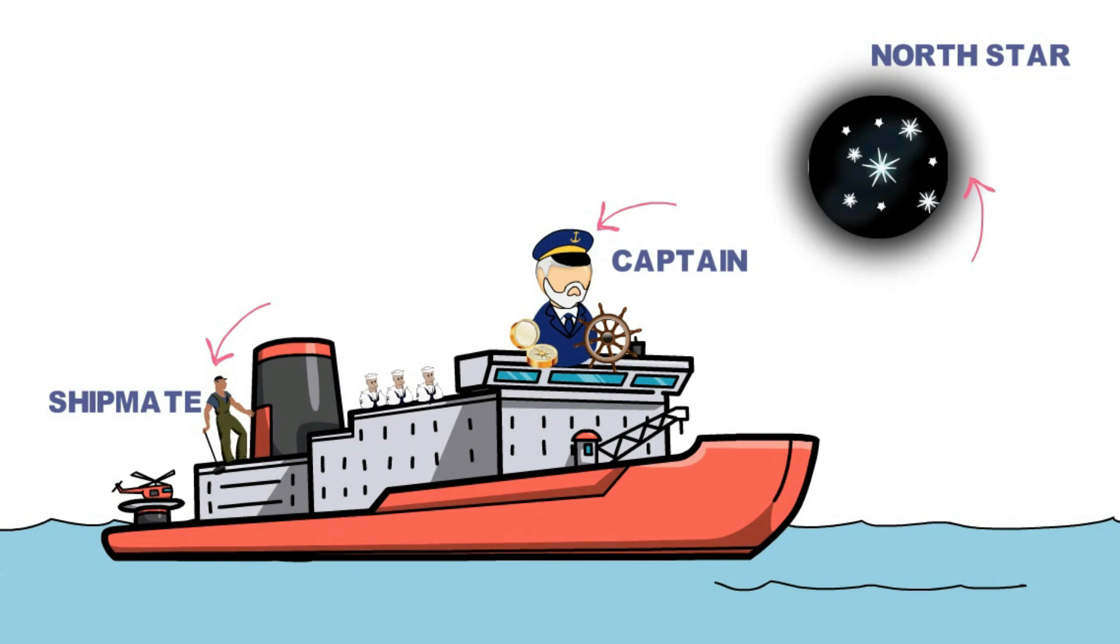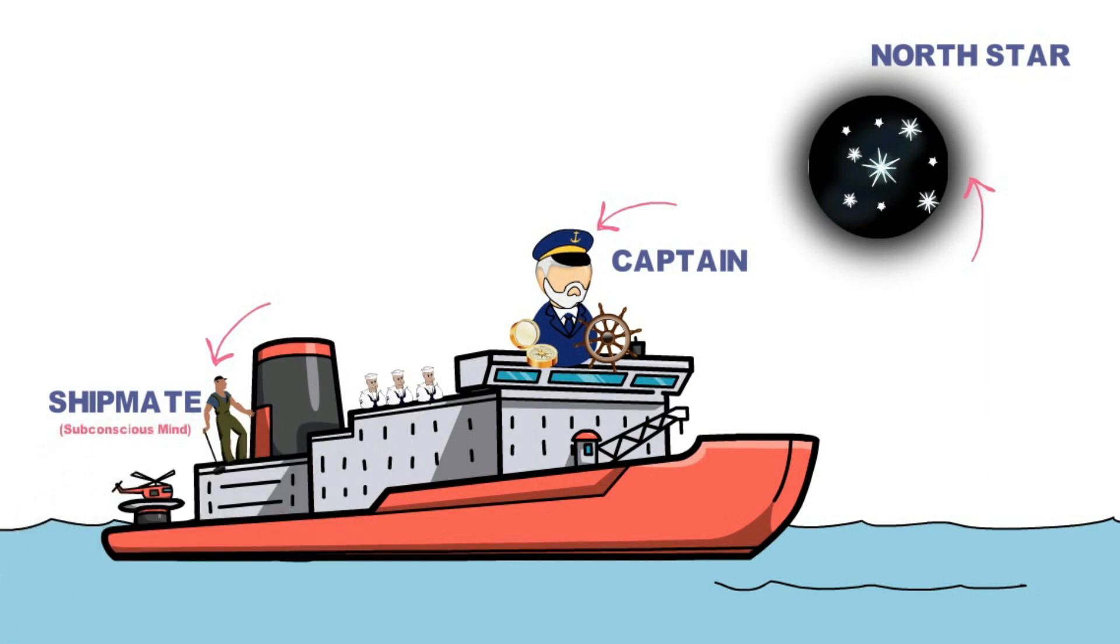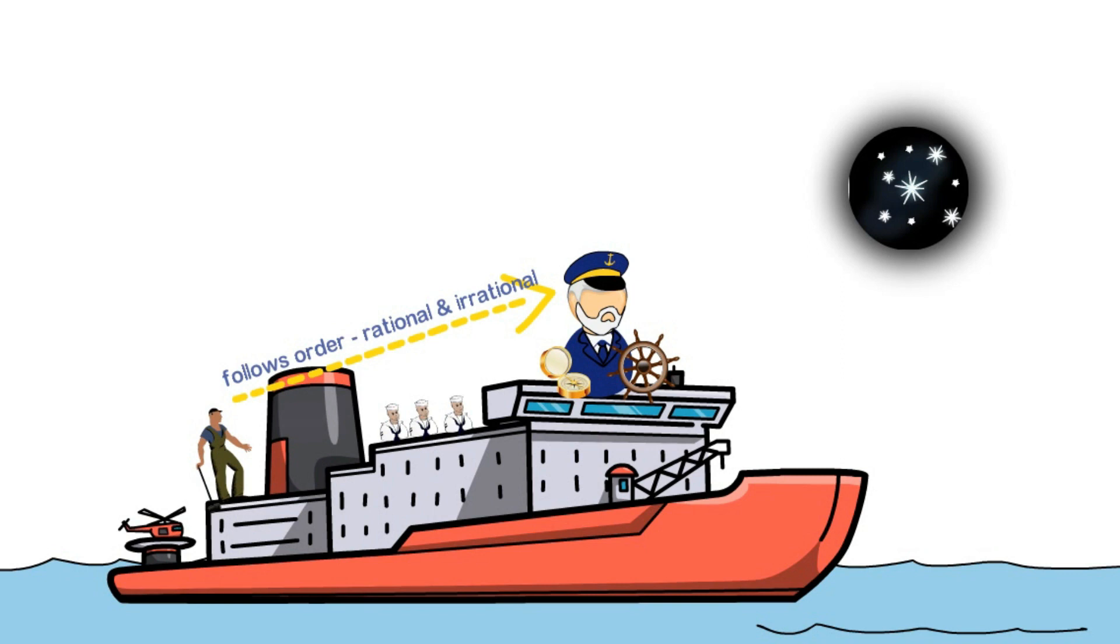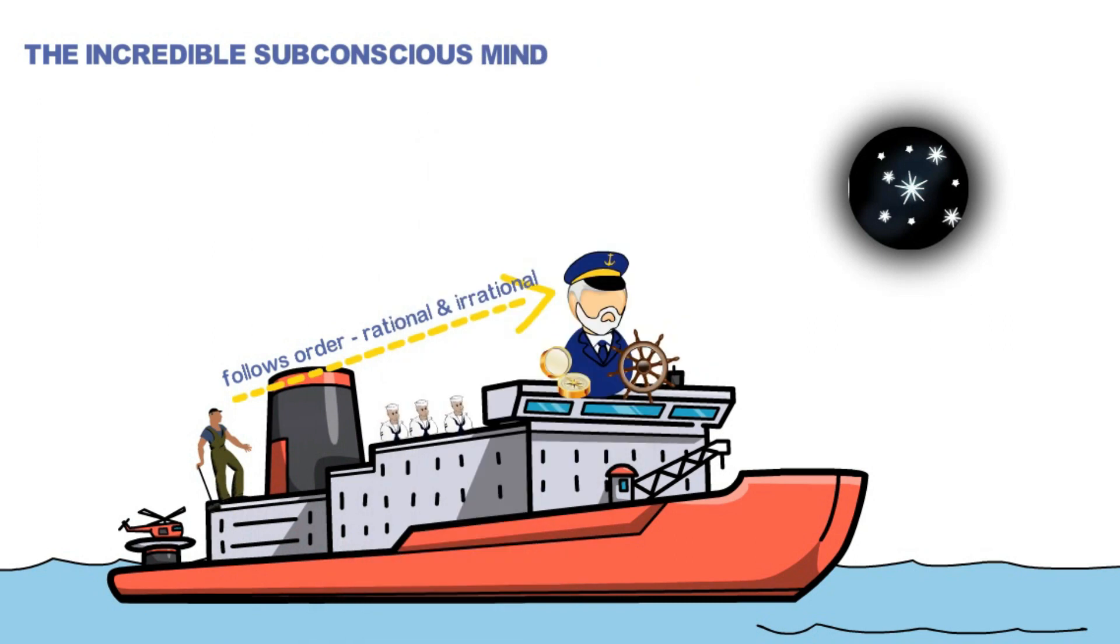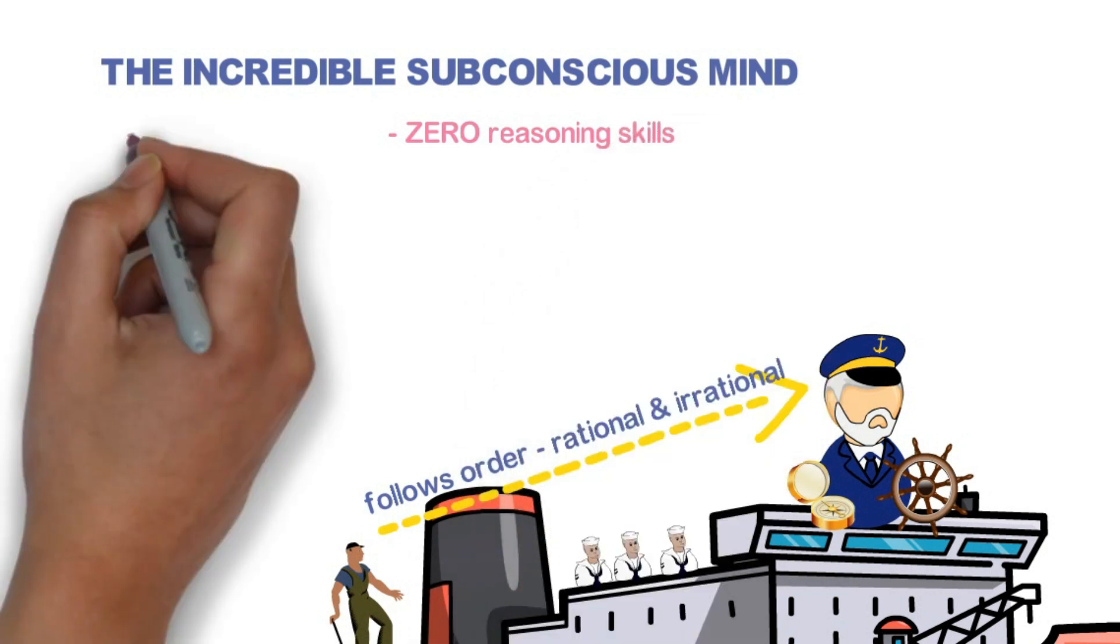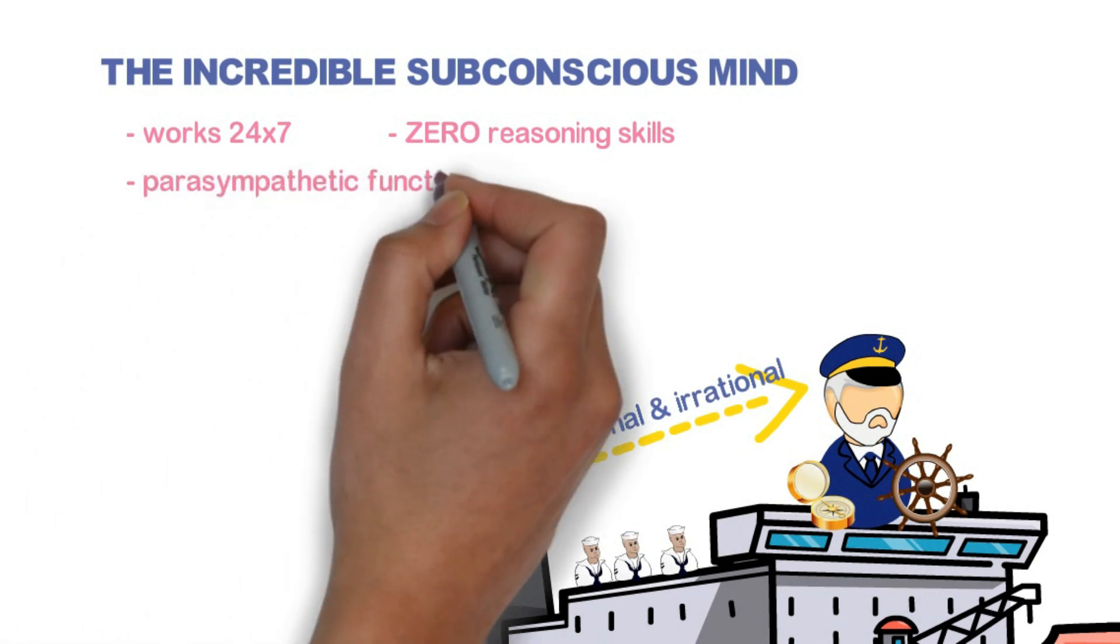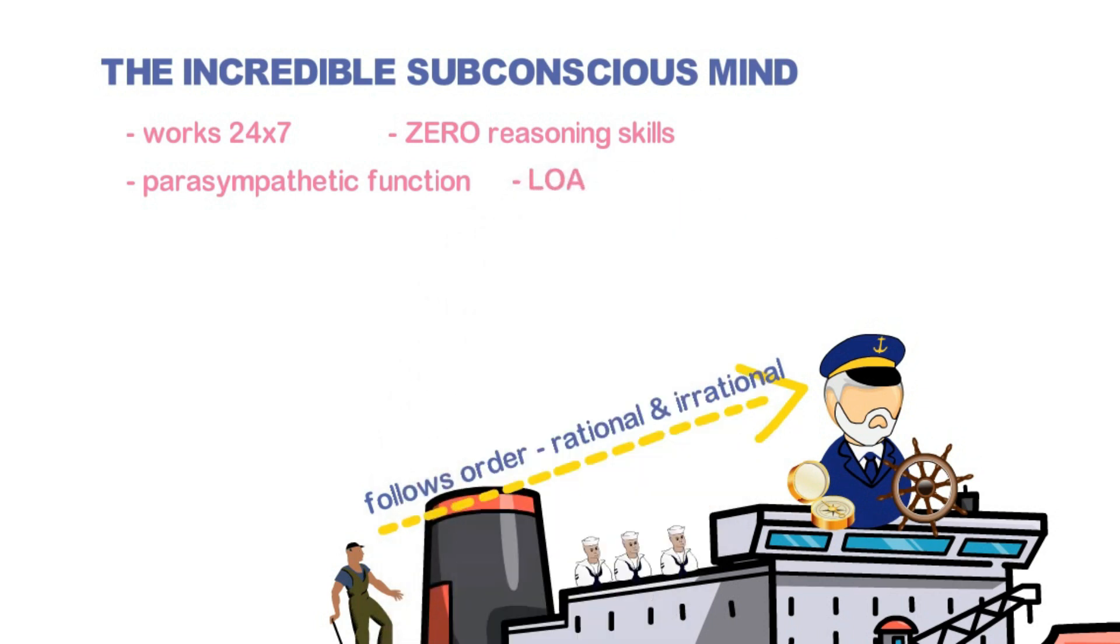Let's discuss each mind in detail. We will begin with the subconscious mind, the shipmate below the deck. Now this guy follows captain's orders. Whether those orders are rational or irrational is immaterial. This guy always responds with yes sir. Now this guy is interesting because even though he can't reason, he does have some incredible skills. As an example, he can work 24-7.